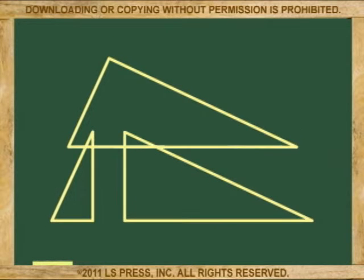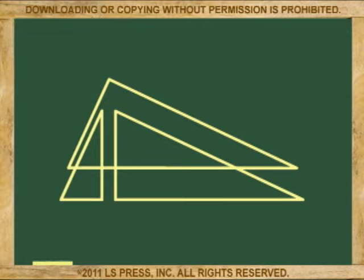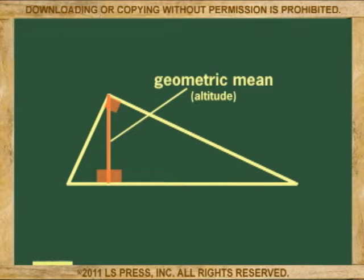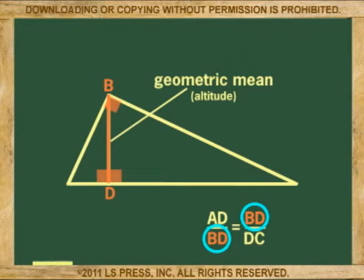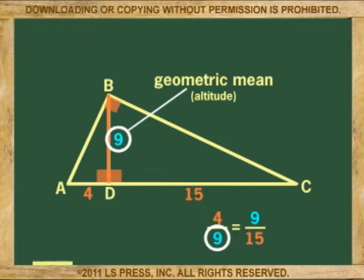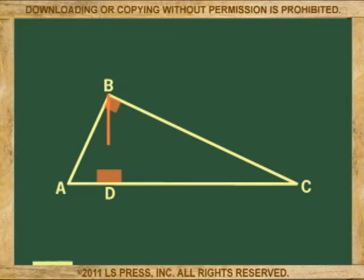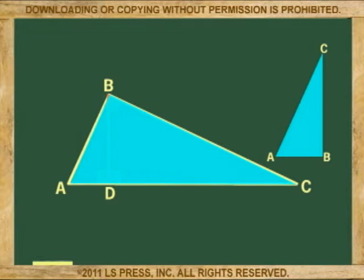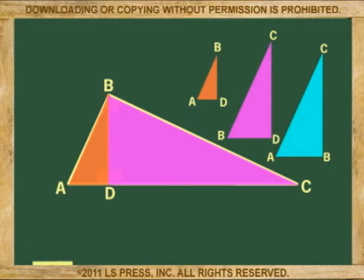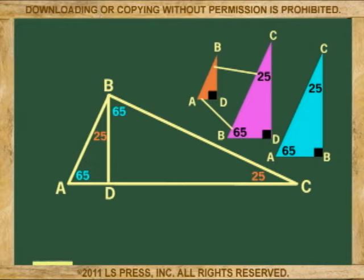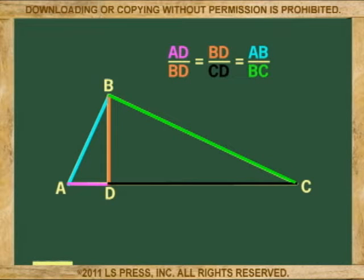We begin right triangles with something called the geometric mean. The geometric mean is the altitude of a right triangle. We call it the mean because it is the middle number that gets repeated in the denominator of the first ratio and the numerator of the second ratio of a proportion. The altitude drawn on a right triangle to the hypotenuse divides the triangle into two smaller right triangles, and by doing so, the three triangles — the original large one, the one to the right, and the one to the left — are all similar. This means that all their corresponding angles are equal and corresponding legs are proportional.